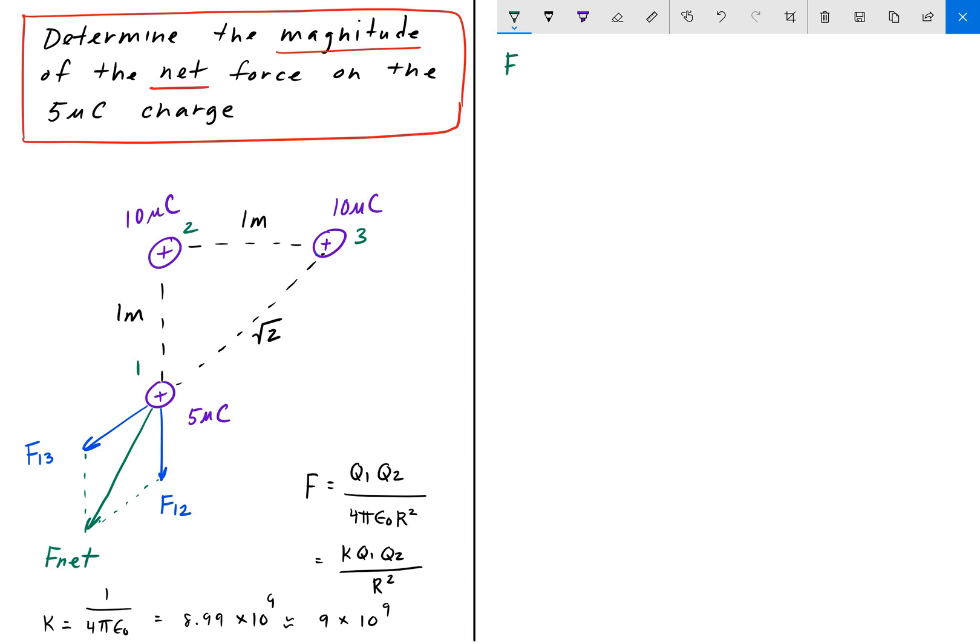We'll start with F12. So F12 is equal to Coulomb's constant K times Q1 times Q2 divided by R squared. Where R is only 1, so 1 squared is 1. And Coulomb's constant is 9 times 10 to the 9. The charge of particle 1 is 5 microcoulombs. And the charge of particle 2 is 10 microcoulombs. So when we solve that, we get 0.45 newtons.